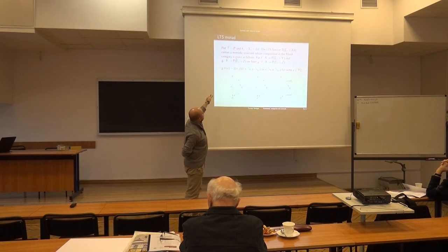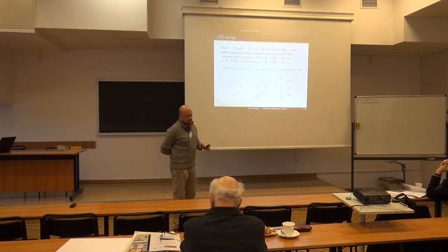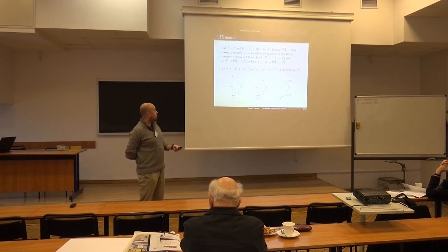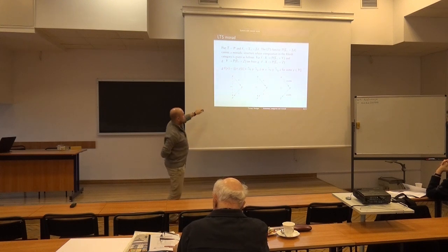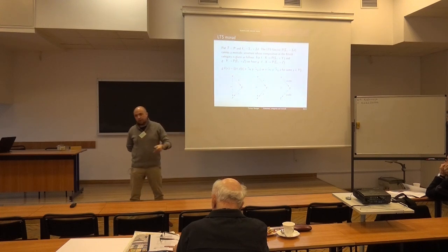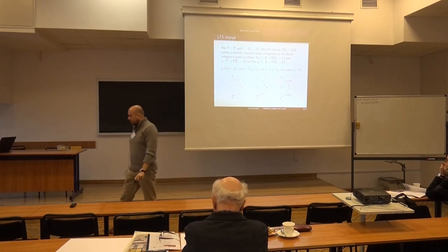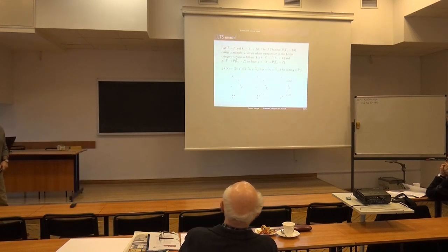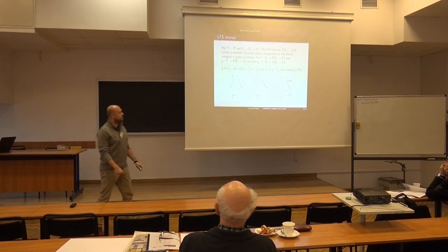How does this monad work for the labeled transition system functor? The LTS monad composition in the Kleisli category is described in terms of three rules: visible followed by invisible gives the composition in one way; invisible followed by visible gives another; and if you compose two visible transitions, you destroy the piece of information — there's no transition from X to Z.